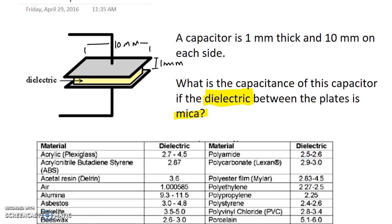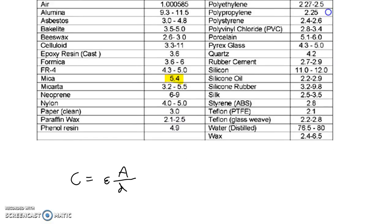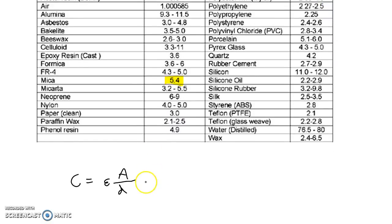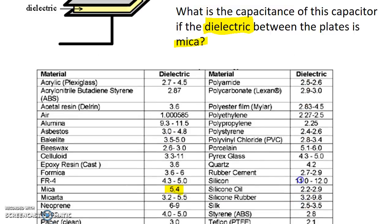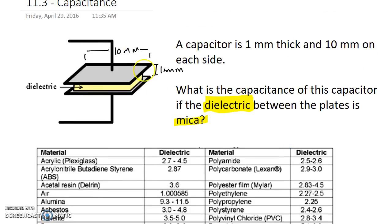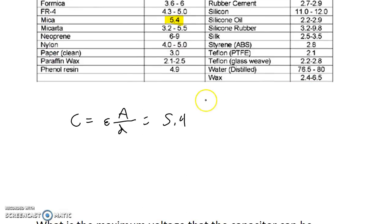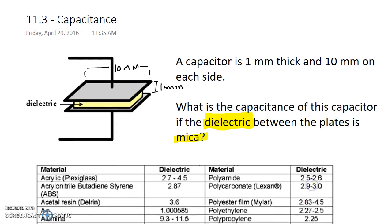We actually know all of the elements that we need now. We need the dielectric, which for mica is 5.4. And the area of the plate is 10 millimeters by 10 millimeters. So that's going to be the area of a square, 10 millimeters squared. And then finally, the separation between the plates, one millimeter.